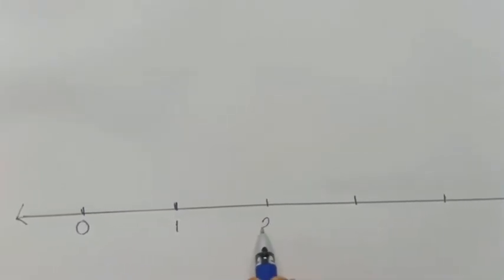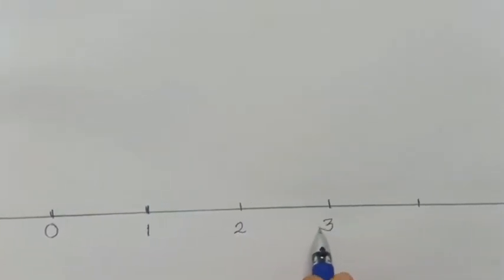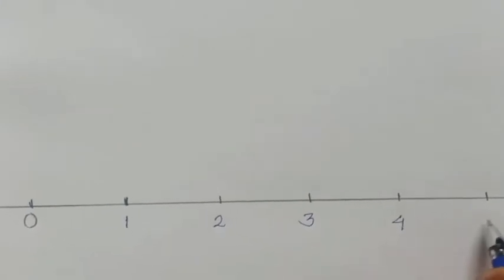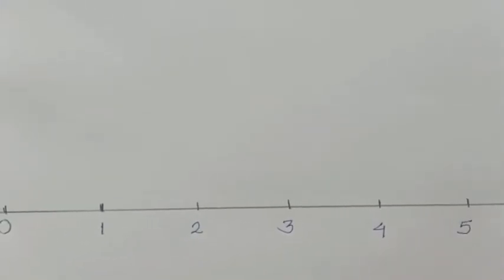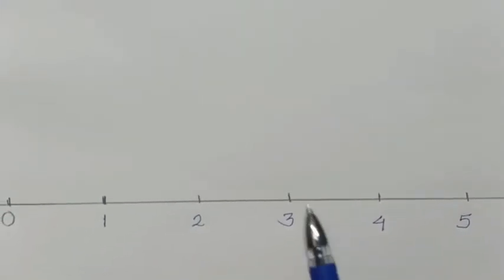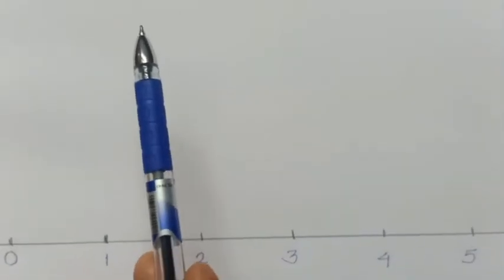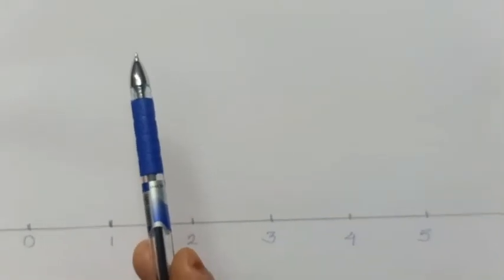We mark 1, 2, 3, 4, and 5 on the number line. Our first number to represent is root 5, so how do we represent root 5?